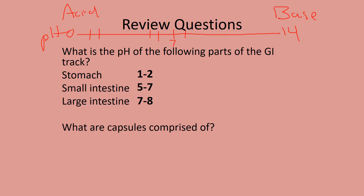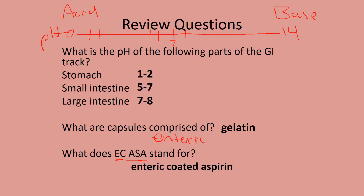Capsules are comprised of a gelatin shell — that's the key term. What does EC ASA stand for? You may recall aspirin is acetylsalicylic acid. EC stands for enteric coated. 'Enter' refers to the intestines; since aspirin is an acid, you don't want to further upset the stomach, so you want the drug to release in the intestines instead.